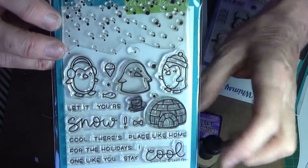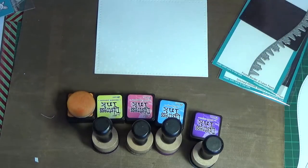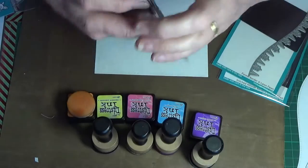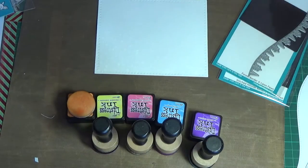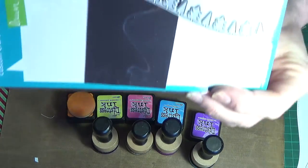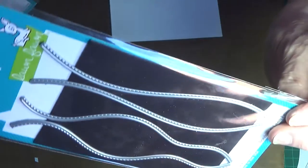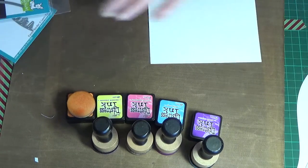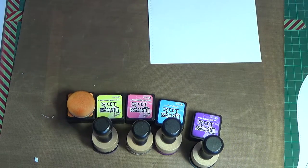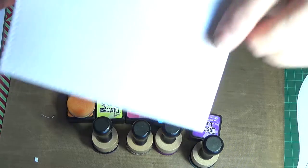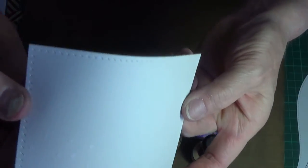This is actually a new stamp set for me. It's Lawn Fawn Snow Cool, the Forest Border, and the Lawn Fawn Stitched Hillside Borders. I use all those in there as well.